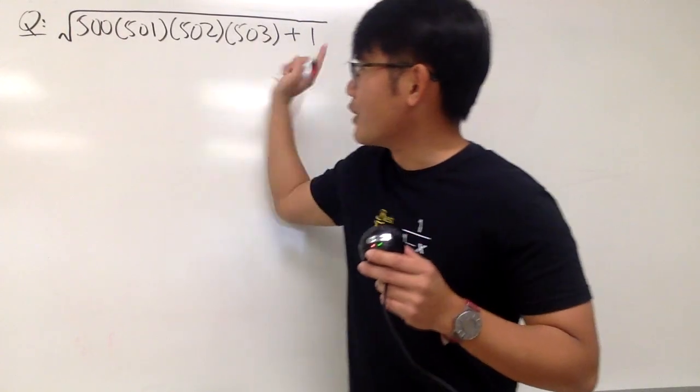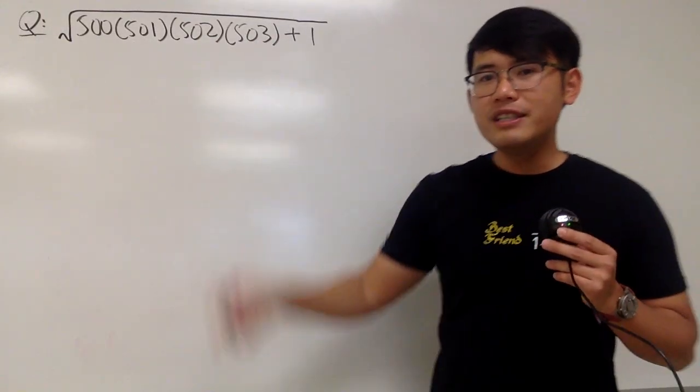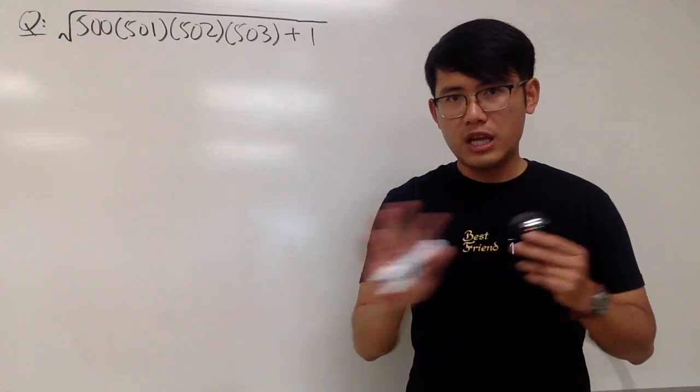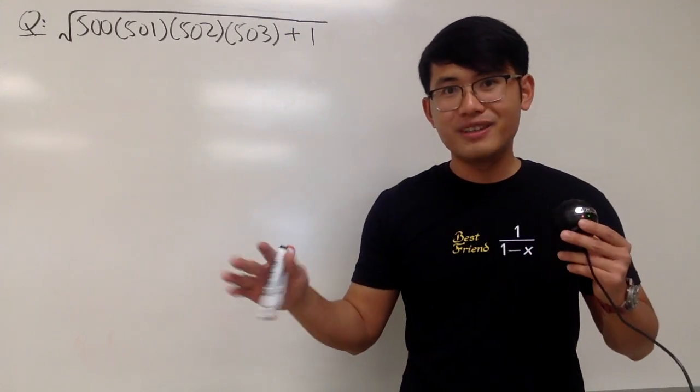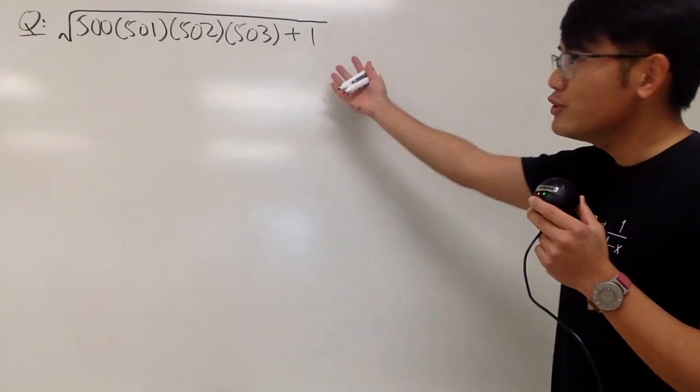Here we are going to compute the square root of 500 times 501 times 502 times 503 and then plus 1. Everything is inside of the square root. Of course, we will not be using a calculator because otherwise what's the fun, right? And as always, please pause the video and try this first.